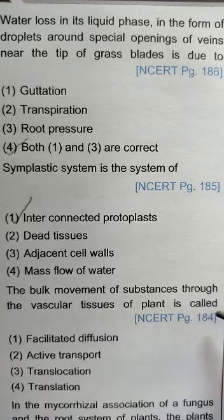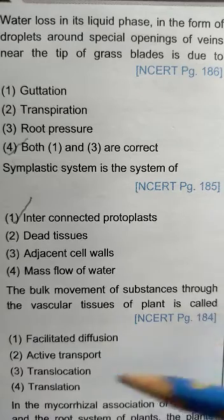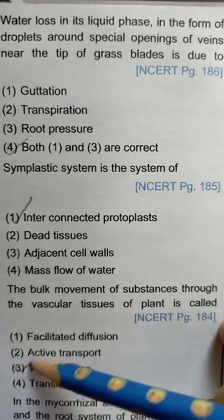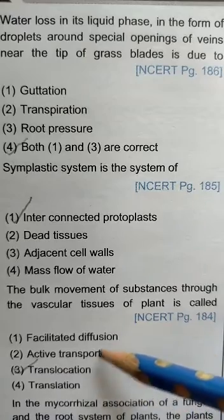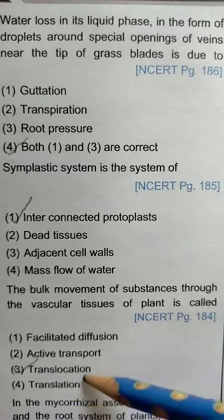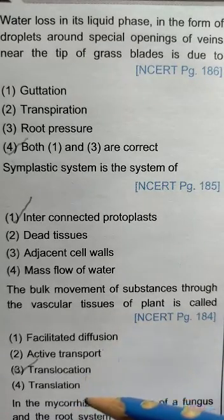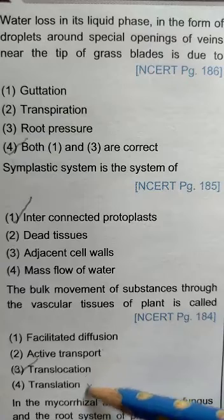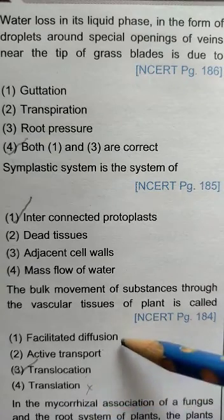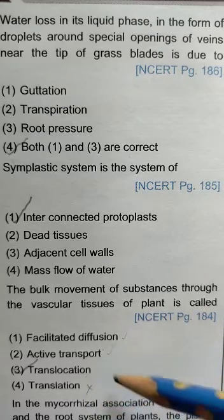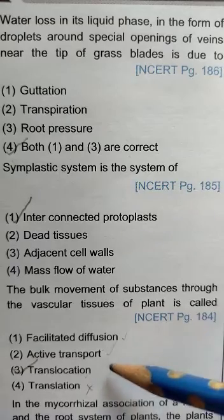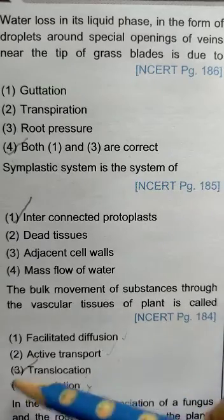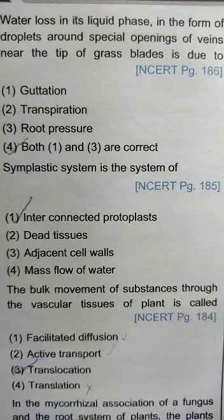Next, the bulk movement of substances through the vascular tissues of a plant is called translocation. Facilitated diffusion and active transport come under short distance transport of water, whereas translocation comes under long distance transport of water. Transpiration and translation are not related to this at all.